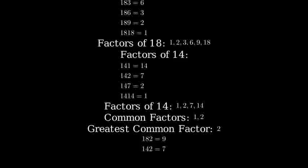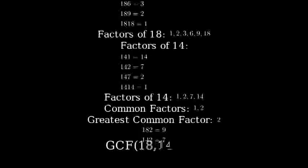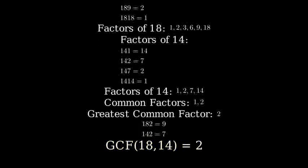And since it's the largest one, it's our greatest common factor. And that's how we find the greatest common factor of 18 and 14. Remember, we first find all factors of each number, then identify the common factors, and finally, select the largest common factor as our GCF.